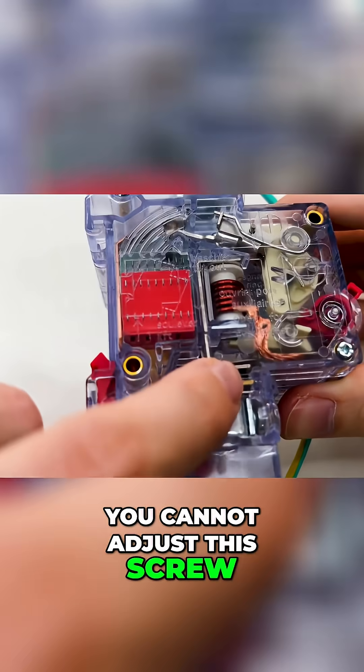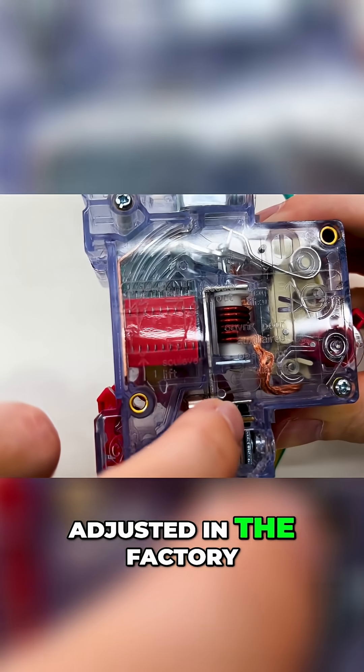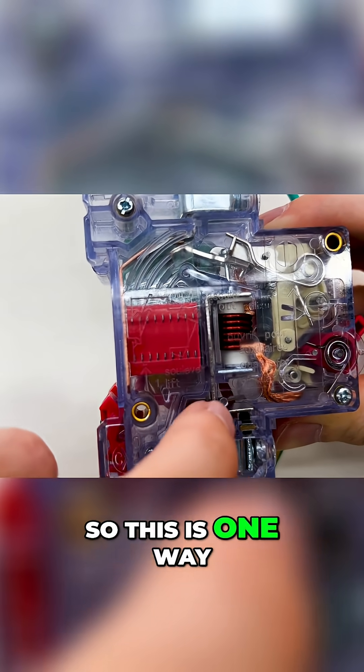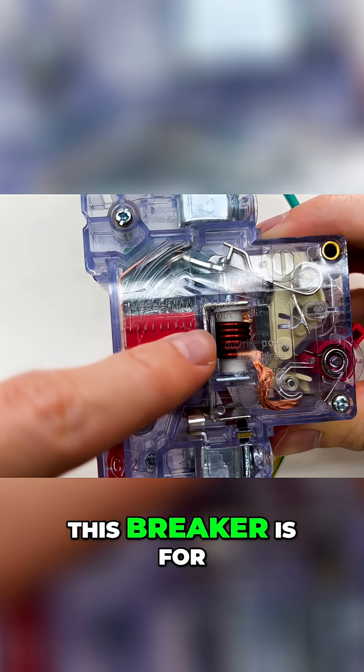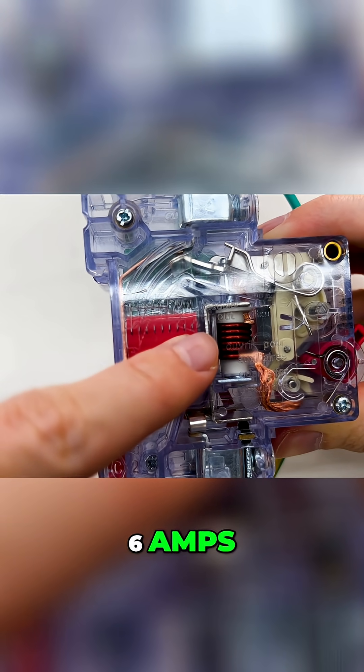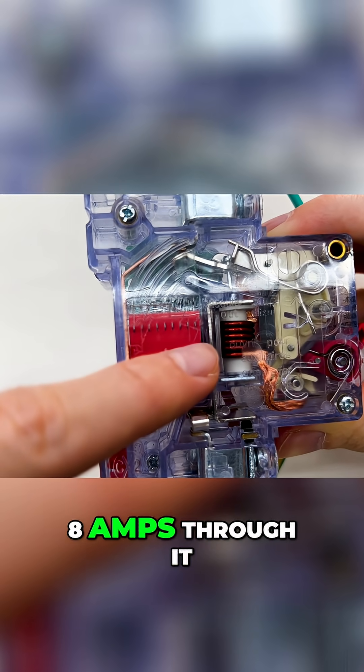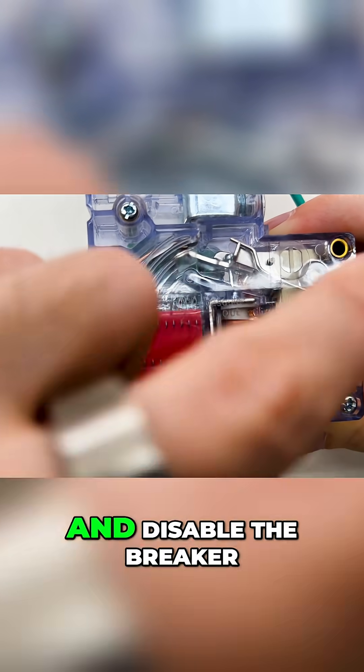You cannot adjust the screw, it is only adjusted in the factory. So this is one way. This is used if, for example, this breaker is for 6A and you would put 8A through it. It would heat up and disable the breaker.